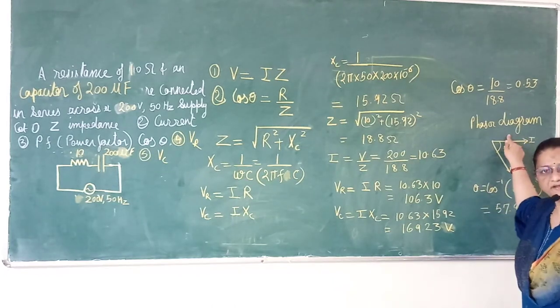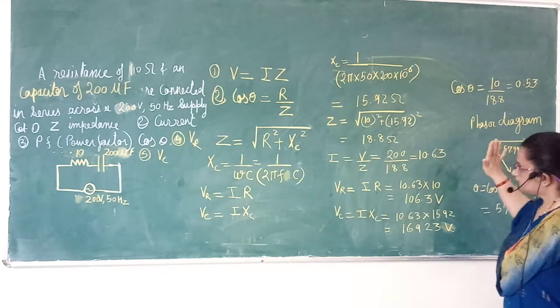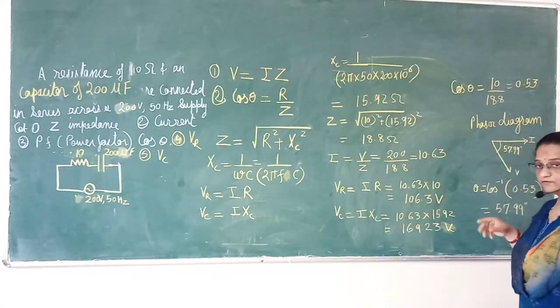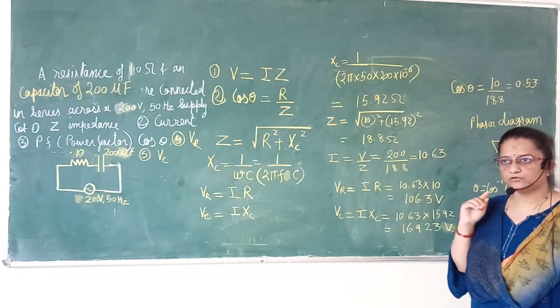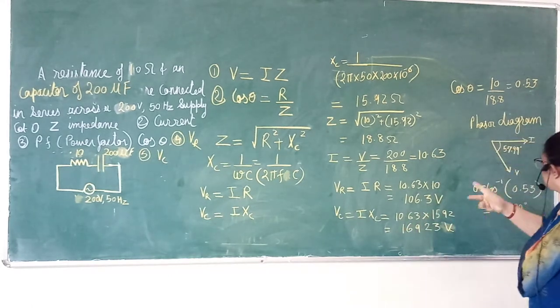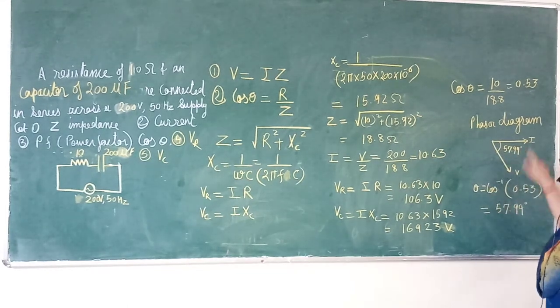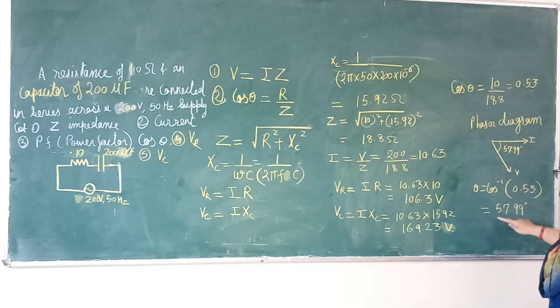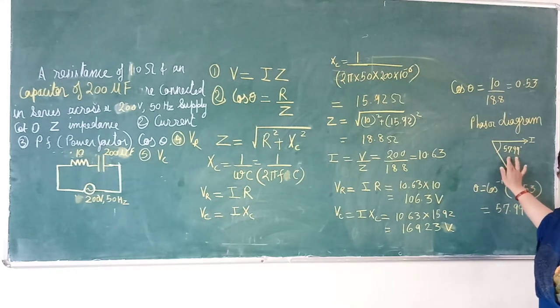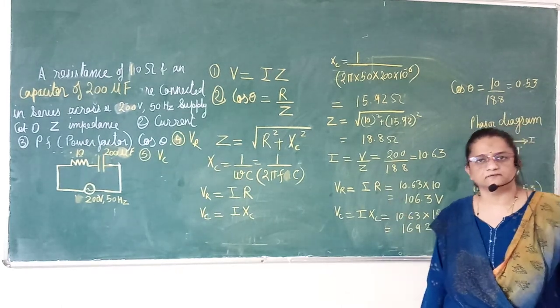So here we take 10.63. And voltage is 200. Current leads the voltage, so I is equal to Im sin omega t plus theta. We have to find out the angle, 57.99 degrees.